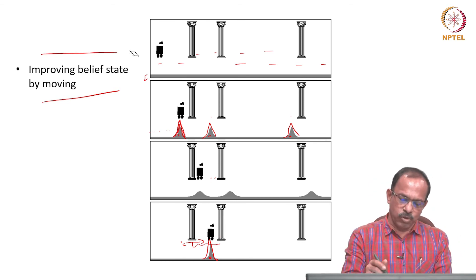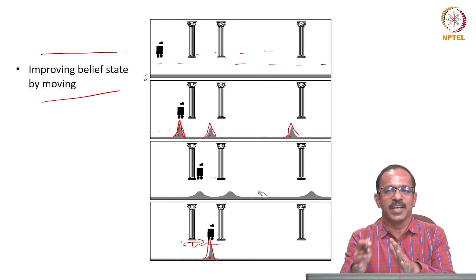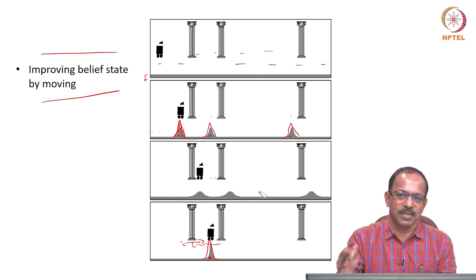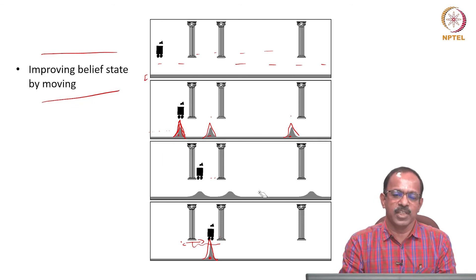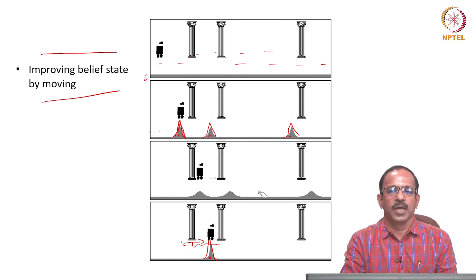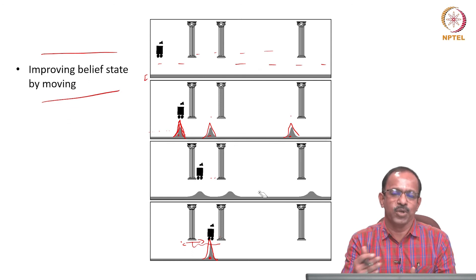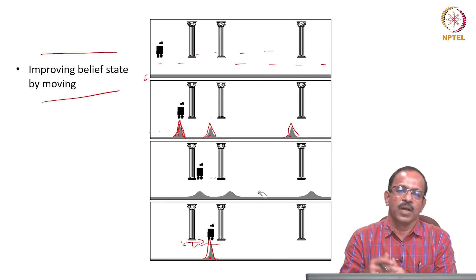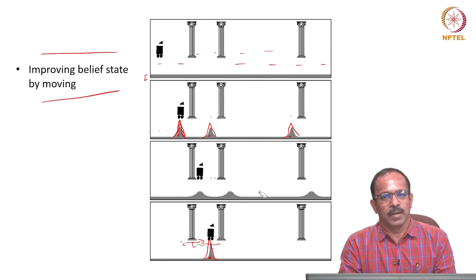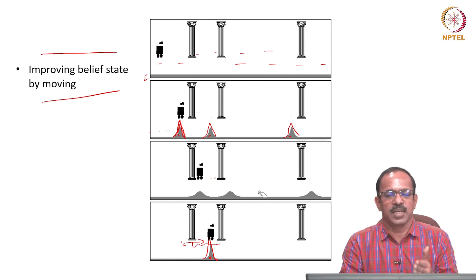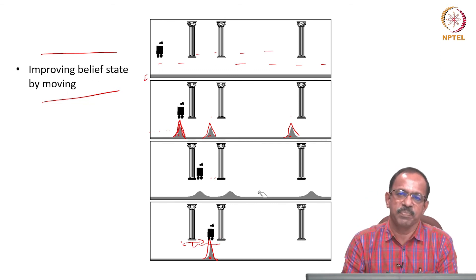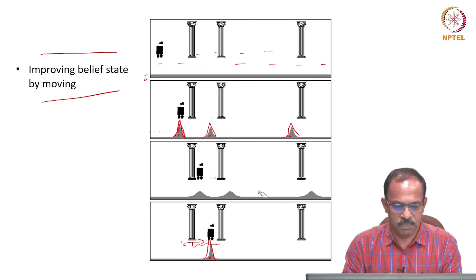Of course, algorithms are needed to carry out this matching of features and to estimate the covariance or uncertainty of the robot's position. We will discuss those aspects — including standard algorithms for feature matching and uncertainty estimation — in the next class. Thank you.